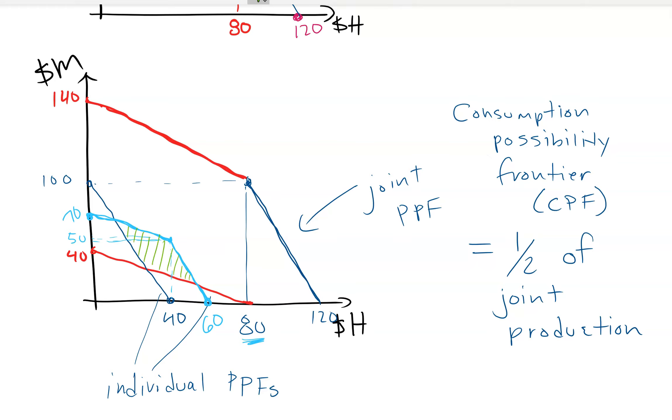So this part, this area is a potential gain. I don't mean like the area of it represents a gain, but I mean any place in there is something that's impossible for them to do alone. It's outside of both of their PPFs.